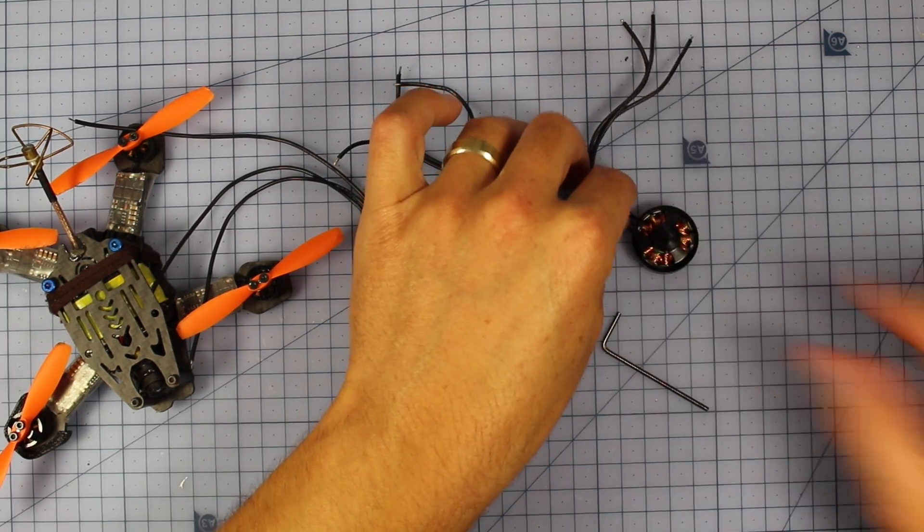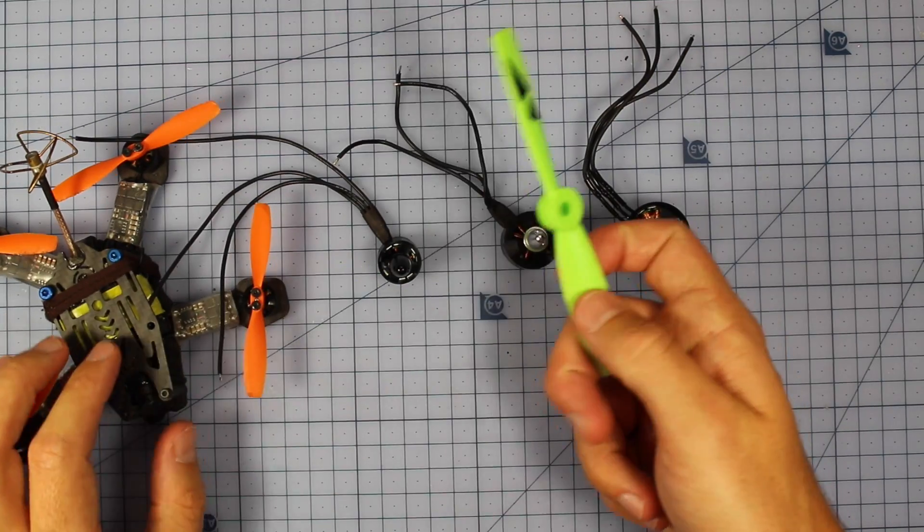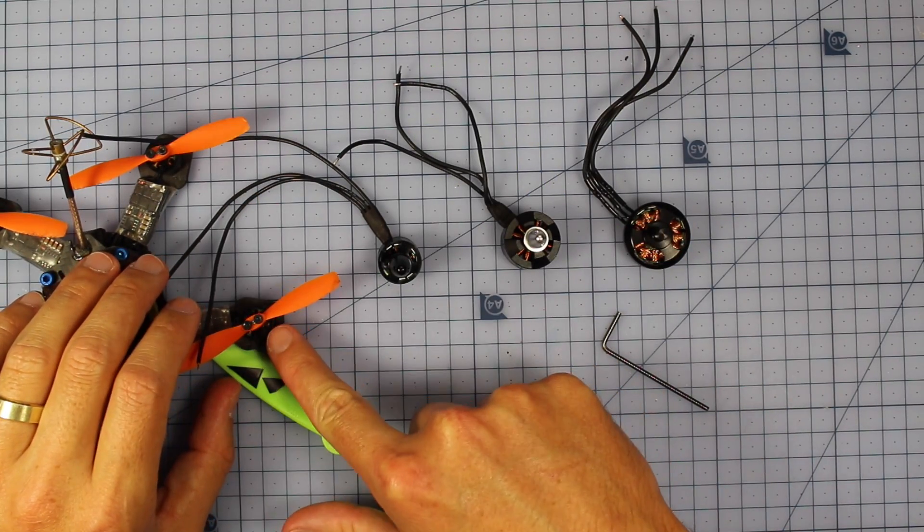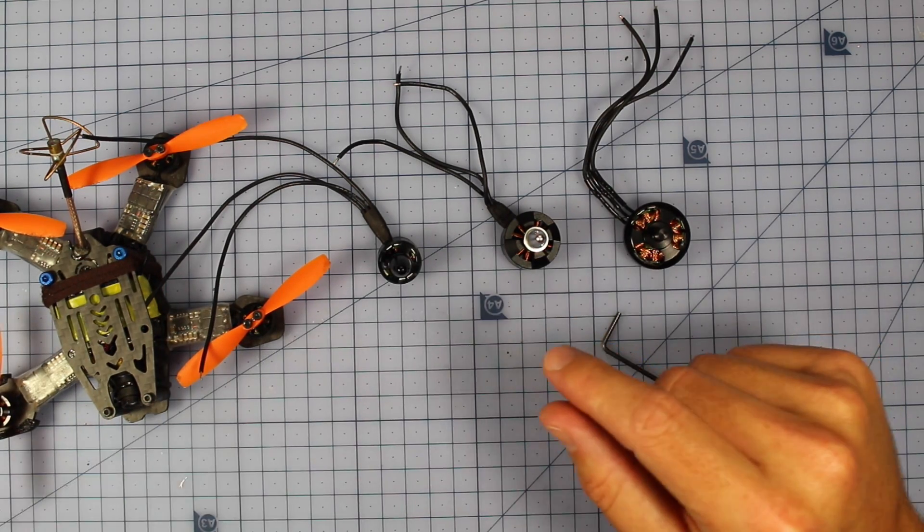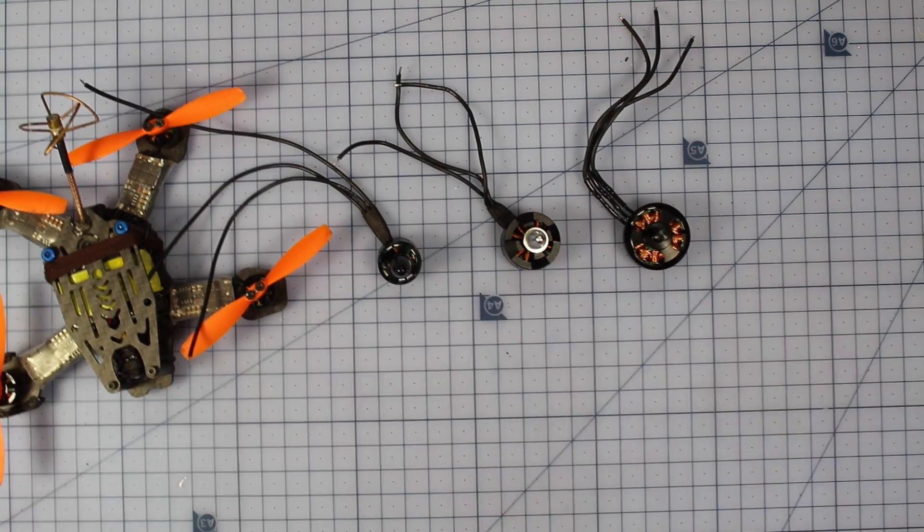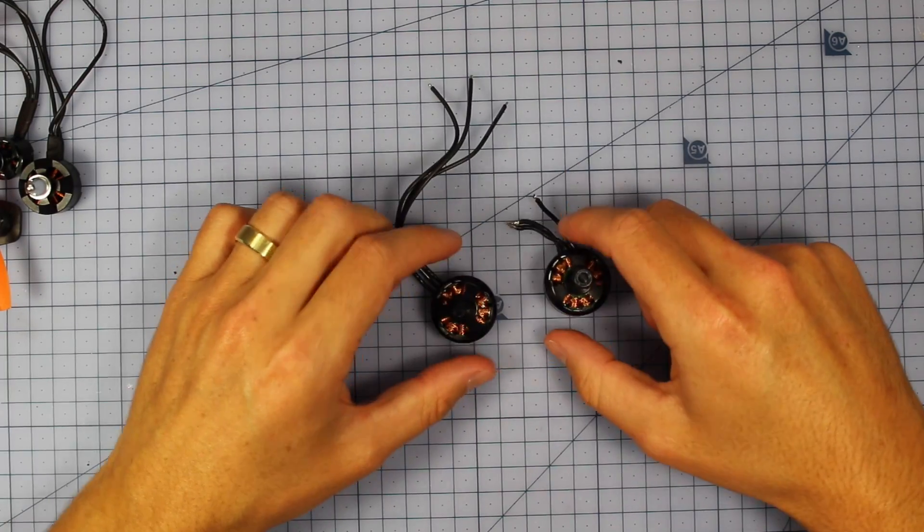If you put this size prop on such a little motor like this, it's going to have a hard time spinning it and you'd probably burn it out. So you want to choose the right motor depending on what sort of frame you get.